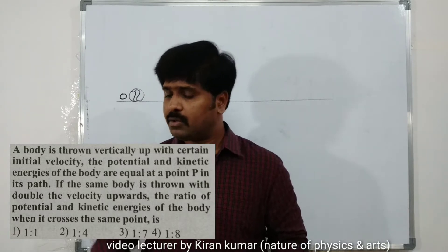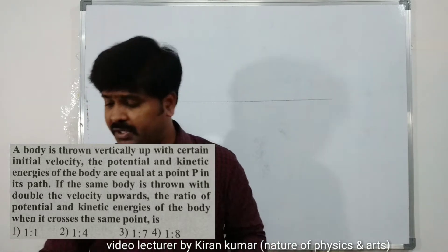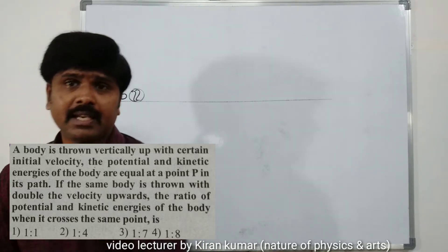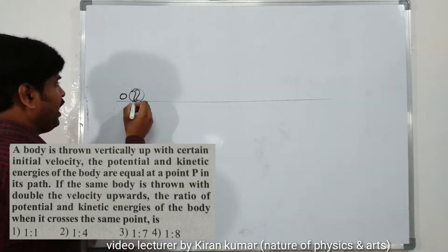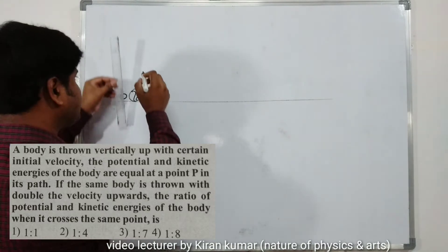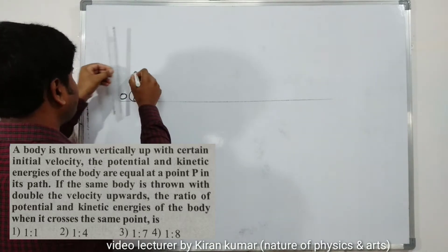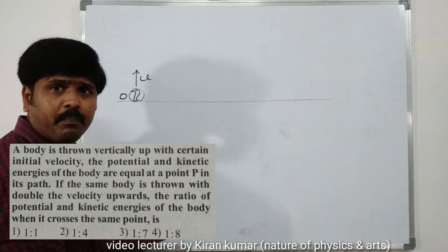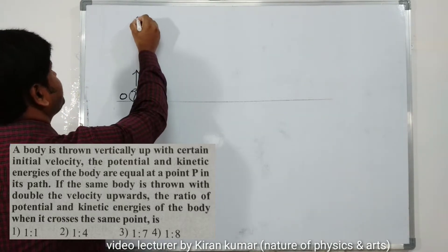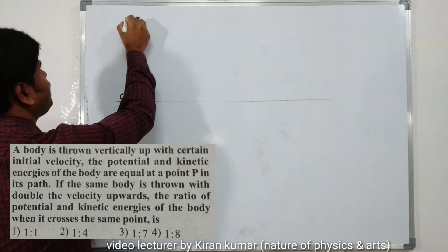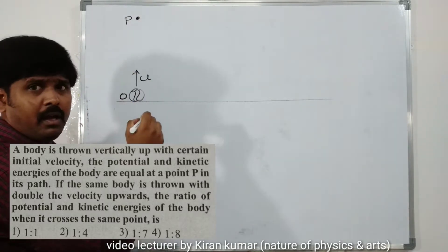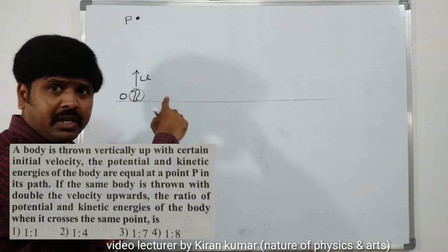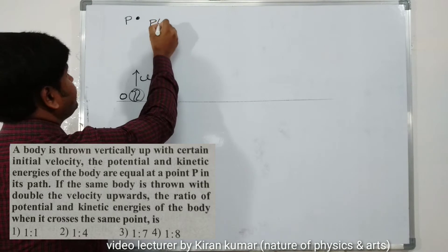Let's understand the given situation step by step. The body is at a point O and is projected vertically upward with initial velocity u, and it reaches a point P. Our first question involves the condition where potential energy equals kinetic energy at point P.